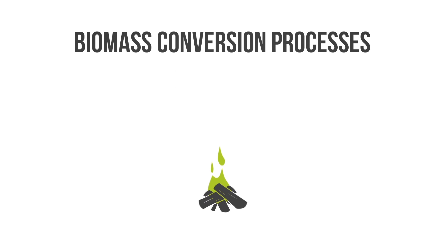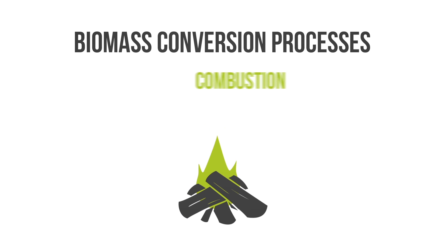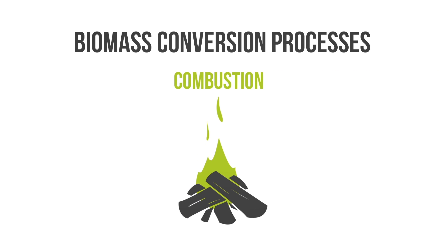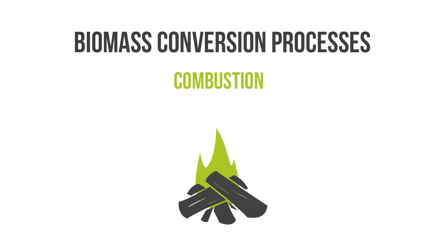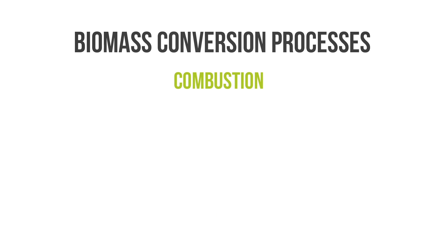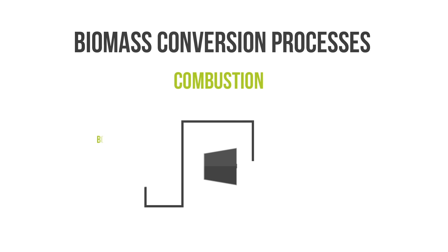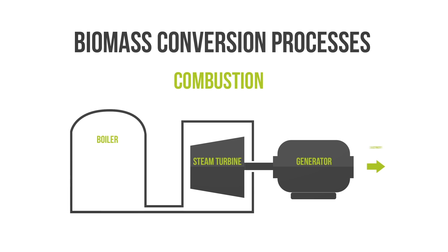Some common biomass conversion processes include combustion, the process where feedstock is burned in the presence of air to release heat — what happens when you start a small campfire with wood. Combustion can be used to heat steam for electricity generation as well.